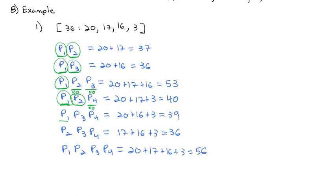In the coalition of Players 1, 3, and 4: removing Player 1 leaves 16 plus 3, only 19 votes — so Player 1 is critical. Removing Player 3 leaves Players 1 and 4 with only 23 votes, short of the 36 needed, so Player 3 is critical. But removing Player 4 leaves Players 1 and 3 with exactly 36 votes, so Player 4 is not critical in this coalition.